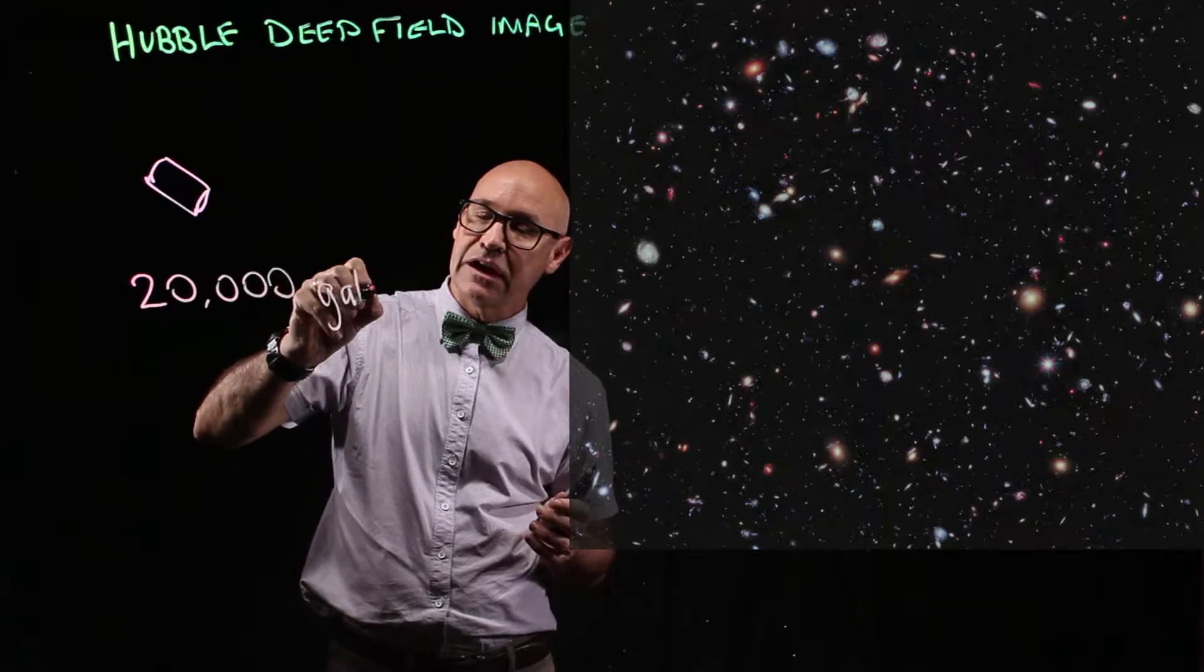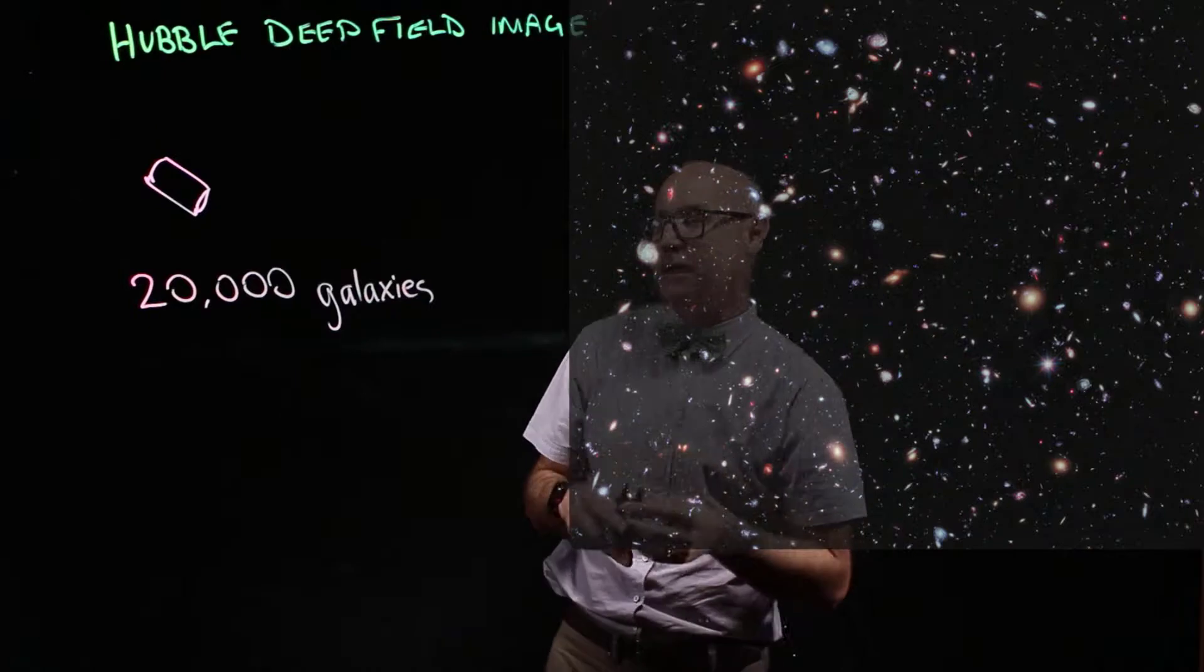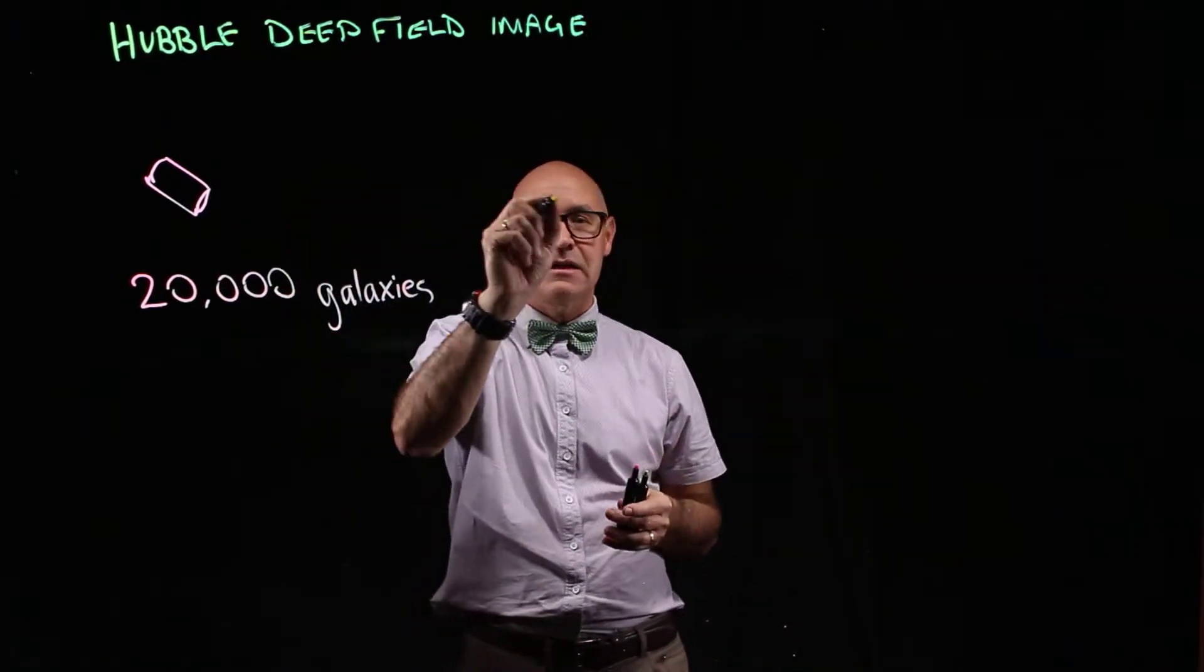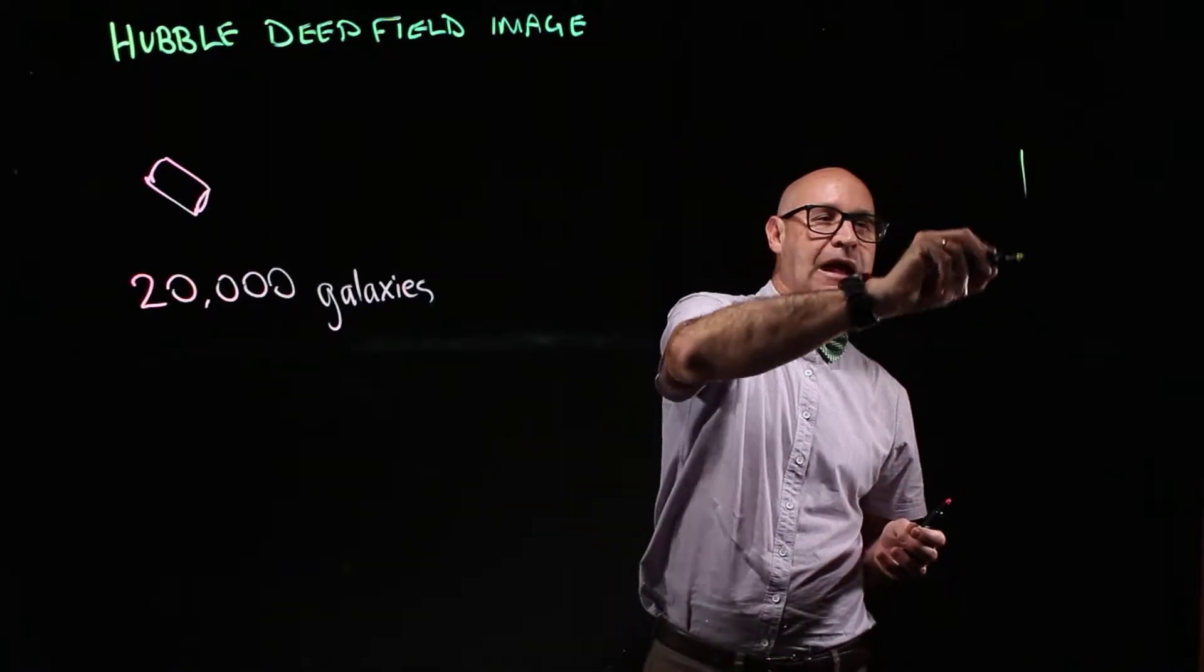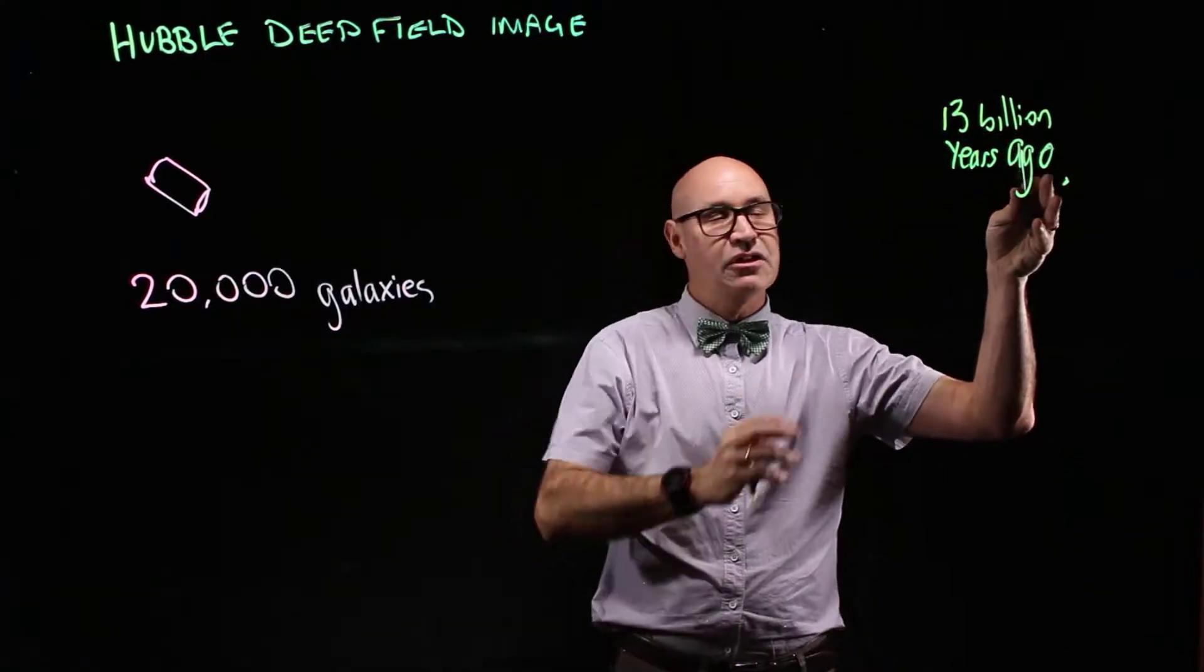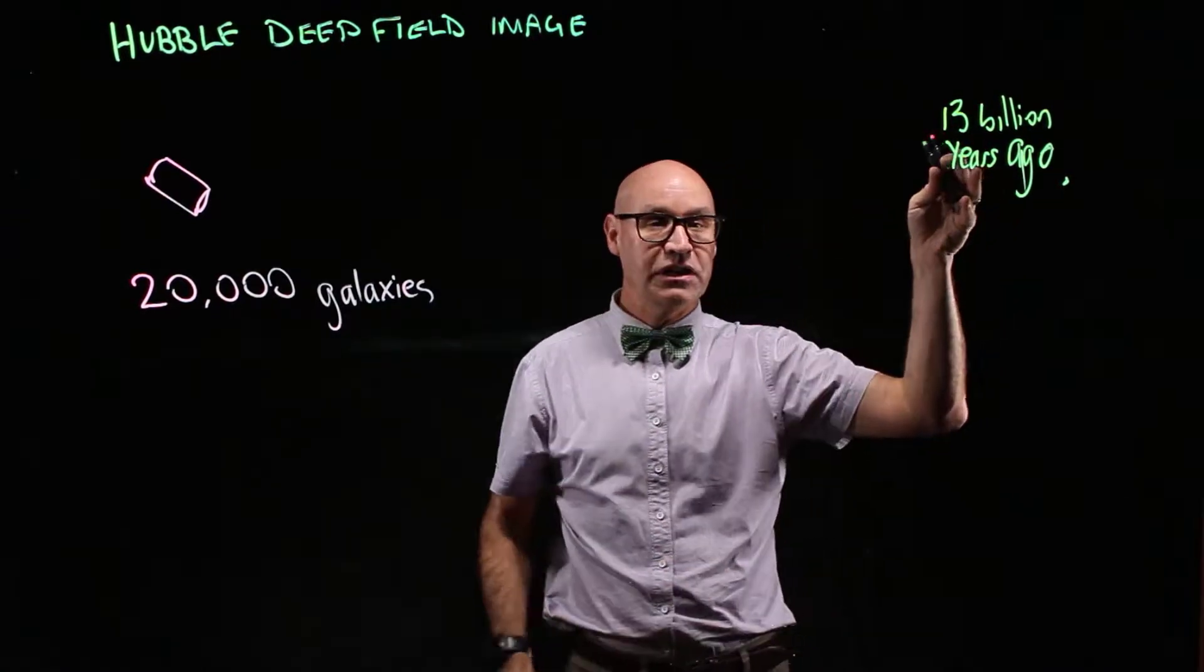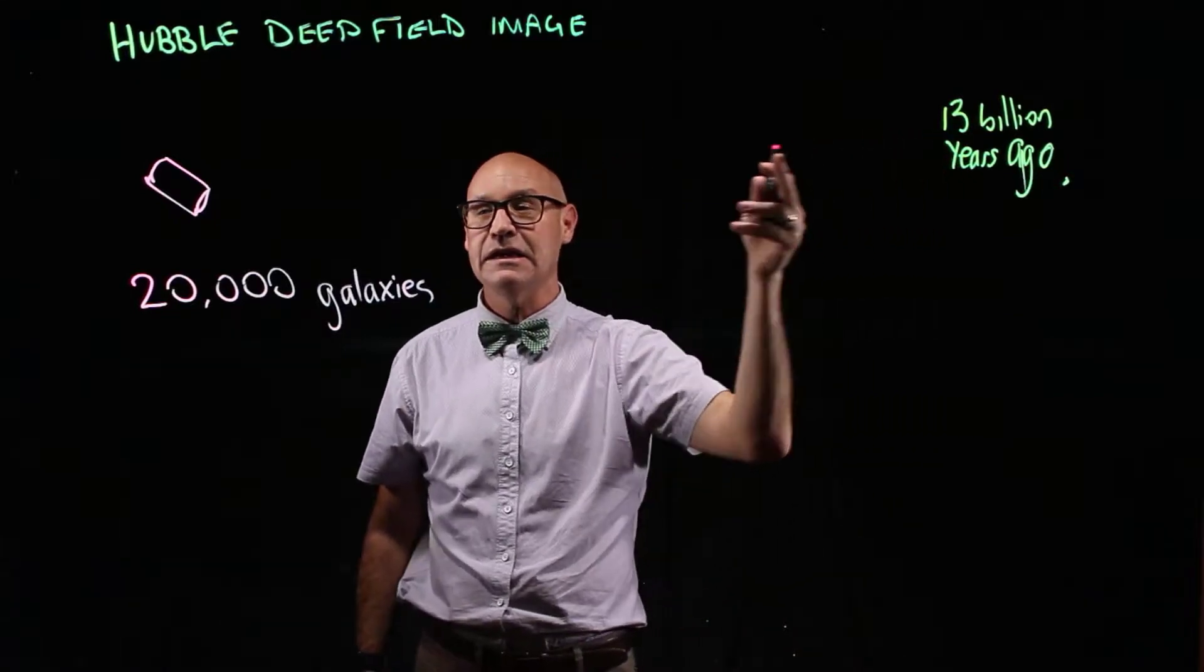Now these galaxies, if you imagine it's peering back out into space, those galaxies can be anywhere through the universe and it was able to look back 13 billion years ago. So what that means is the light that the Hubble Space Telescope is seeing actually left these galaxies 13 billion years ago.